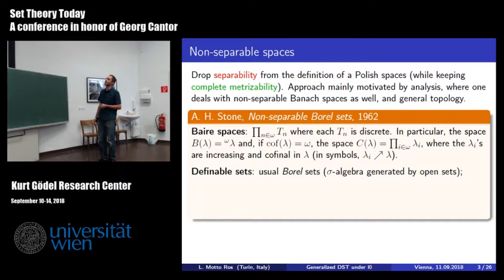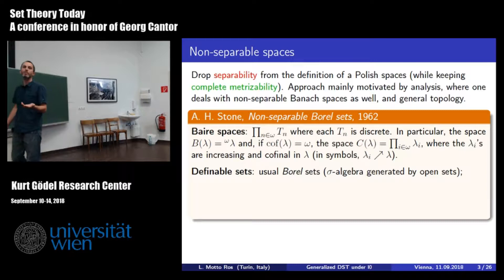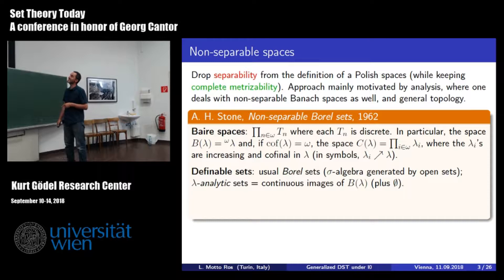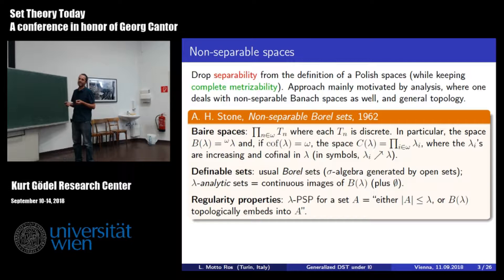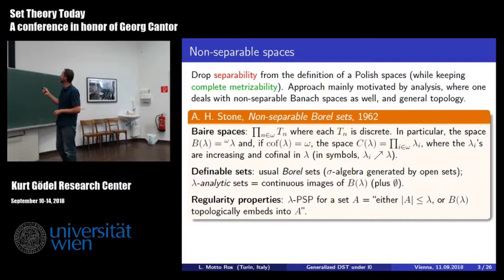He wants to keep all the rest more or less the same. For definable sets, he uses the usual Borel sets—the sigma-algebra generated by open sets—except that when moving to analytic sets, he moves to lambda-analytic sets, which are continuous images of B_lambda. For regularity properties, he considers the lambda-perfect set property: either a set has size at most lambda, or it contains a copy of C_lambda. This version is forced by the fact that there are sets which don't satisfy the perfect set property if lambda is greater than omega.